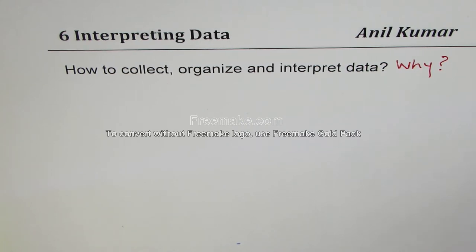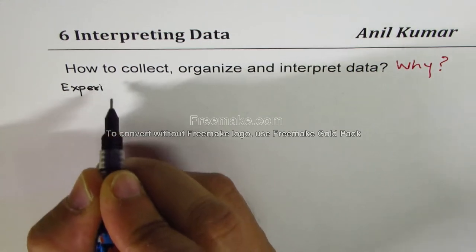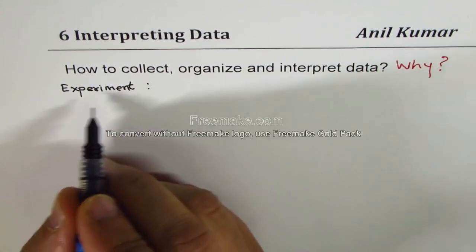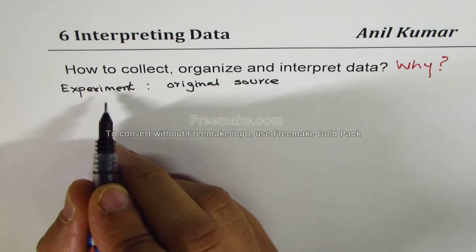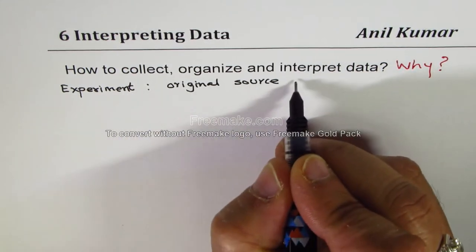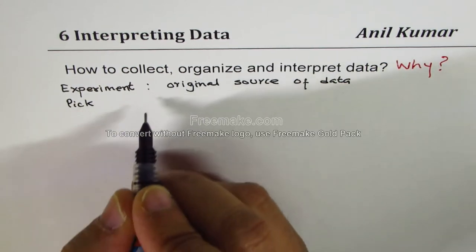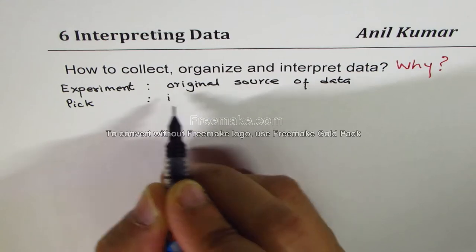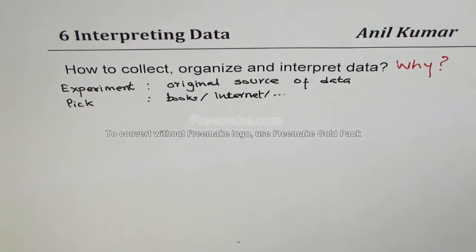The first thing we want to do while interpreting data is to think about an experiment. If we are originating data, we need an original source. To create data you may conduct an experiment, which means you create an original source of data. Or you can pick data from others — from books or from the internet. There is a lot of data available, but the fun is to see where it could be applied.